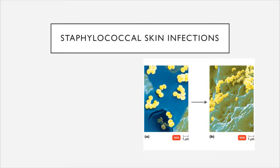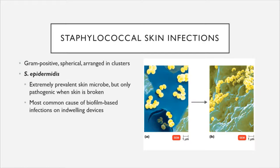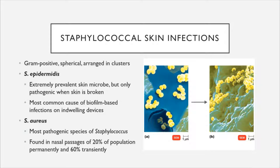Staphylococcal skin infections are caused by members of the genus Staphylococcus, which are gram-positive, spherical or coccus-shaped, and arranged in clusters. There are two major members relevant to our discussion: Staphylococcus epidermidis and Staphylococcus aureus. Staphylococcus epidermidis is a very prevalent member of your normal skin microbiome and under normal circumstances is completely harmless. It is only pathogenic when the skin is broken and it is able to obtain a portal of entry, often by forming biofilms on indwelling medical devices such as catheters.